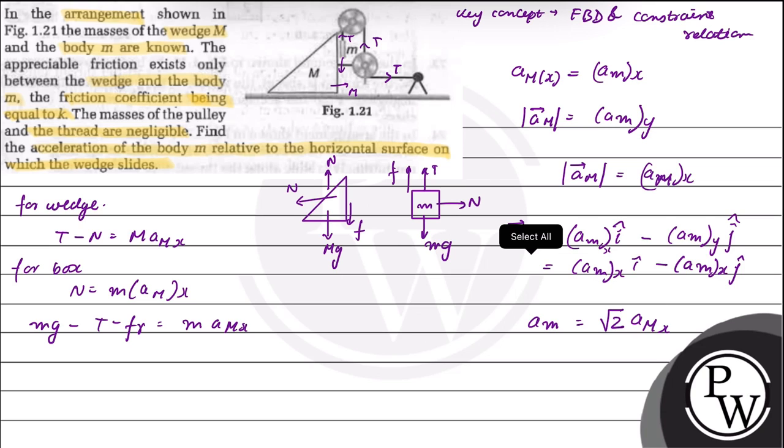We know that the body will slip, so maximum friction will be equal to K normal, or it can be written as M K A capital M_x.